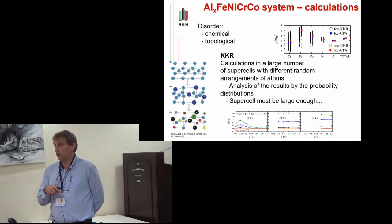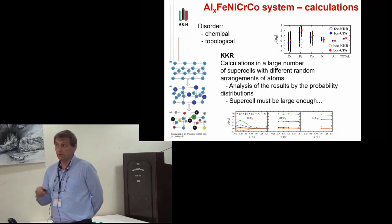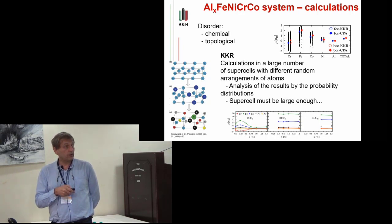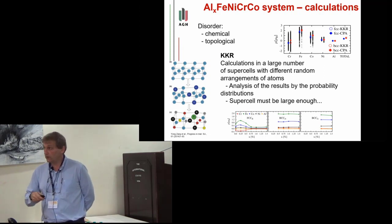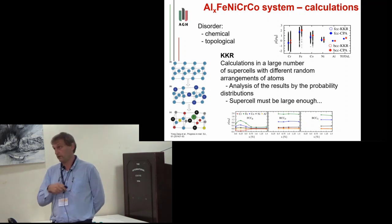You see the average values agree quite well between these two, but the distribution, the span of the magnetic moments, is huge. For example, in this case for chromium, you are observing minus 0.2, but it ranges from plus 2 to minus 2. So such a change of the distance between nearest neighbors and change of occupancies of nearest neighbors can produce such huge span of particular parameters.